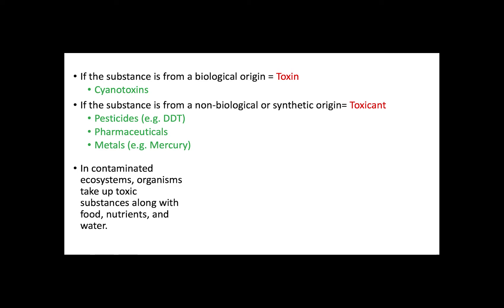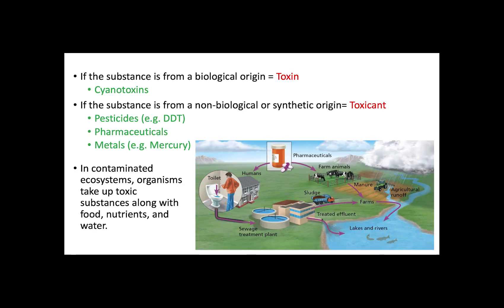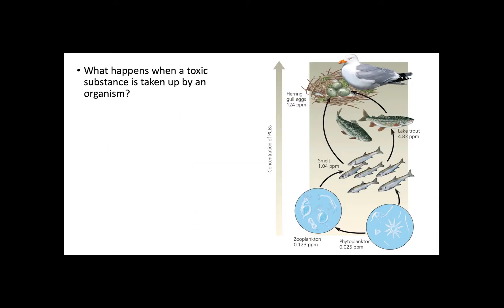Organisms that live in contaminated areas end up taking in several toxic substances from the food they eat and the water they drink. Aquatic organisms, like fish, are among the most threatened organisms from the introduction of toxic chemicals into the environment. What happens when organisms take up toxic substances depends on many chemical, biological, and even environmental factors.